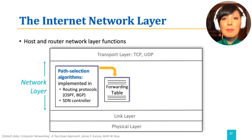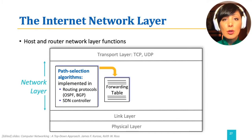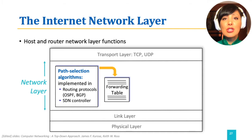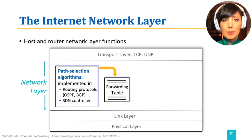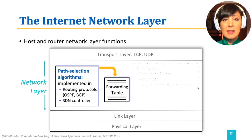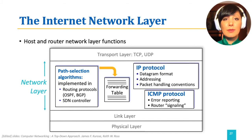They implement path selection mechanisms running at the control plane, resulting in forwarding decisions written at each router's forwarding table. Other protocols running at the network layer are the IP and ICMP protocols.